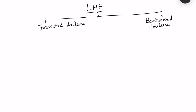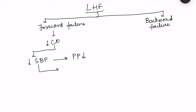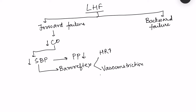In left-sided heart failure, on the forward side, there is decreased cardiac output, which leads to decreased systolic blood pressure — since cardiac output is the main determinant of systolic blood pressure — and therefore decreased pulse pressure. Because systolic blood pressure has decreased, there will be activation of the baroreflex. This leads to two things: increased heart rate causing tachycardia, and vasoconstriction throughout the systemic circulation, leading to cool peripheries.